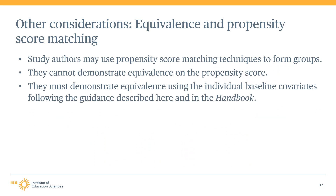For QEDs, study authors sometimes use propensity score matching techniques to select or weight the units in the intervention and comparison groups. The idea is to use individuals' baseline characteristics to predict how likely a given individual is to have received the intervention. The estimated probability of being in the intervention group is called a propensity score. The authors then often try to match individuals based on their propensity scores to form intervention and comparison groups to help ensure that the groups are similar at the start of the intervention on those baseline characteristics.